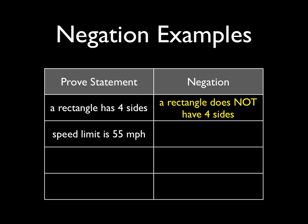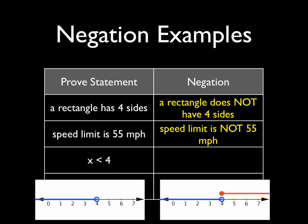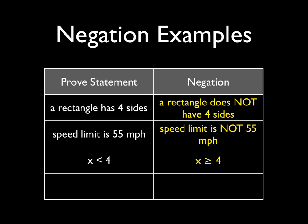If we want to prove that the speed limit is 55, we assume that the speed limit is not 55. If we want to prove that x is less than four, the common thing to say is x is greater than four, but that's not exactly accurate. If you think of a number line, less than four does not include the number four, so the negation would include the number four. The proper negation is x is greater than or equal to four.